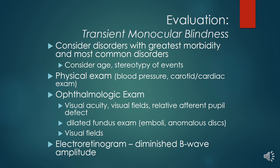In evaluating transient monocular blindness, consider the disorder of greatest morbidity and the most common disorder. Consider the age and stereotype of events. Physical exam includes blood pressure, carotid and cardiac exam. Ophthalmic examination includes visual acuity, visual fields, relative afferent pupil defect, dilated fundus exam, emboli, anomalous disc, and visual field defects. Electroretinogram may show diminished B-wave amplitude.